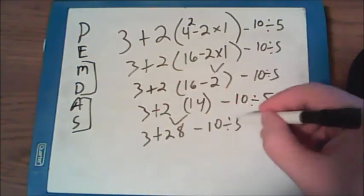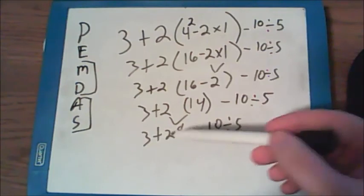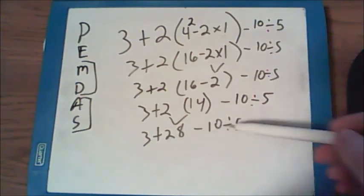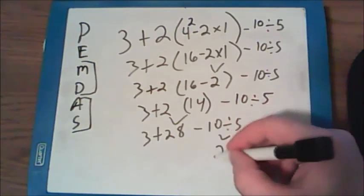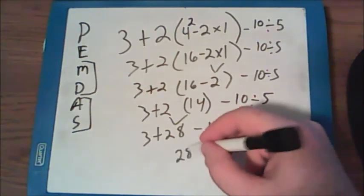Once I bring down everything else, I see that the next step is either addition, subtraction, or division. And of course, I will do the division first. 10 divided by 5 is 2. Bringing down everything else, I see that I have nothing but addition and subtraction left.